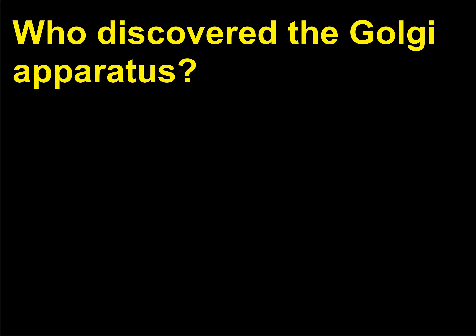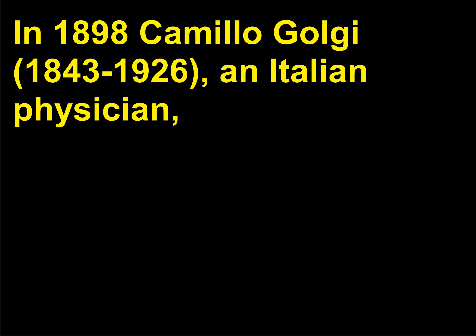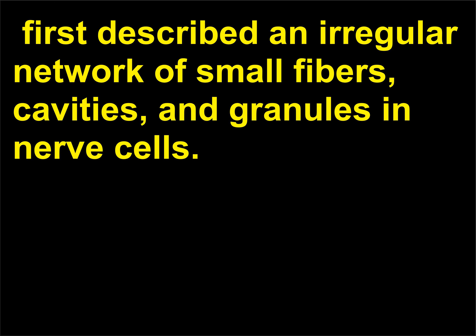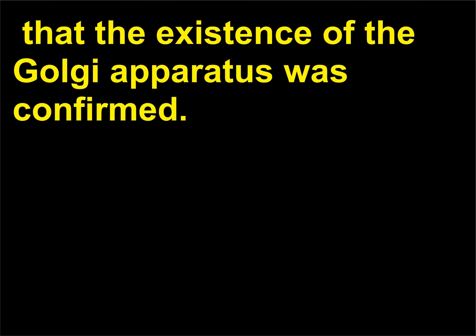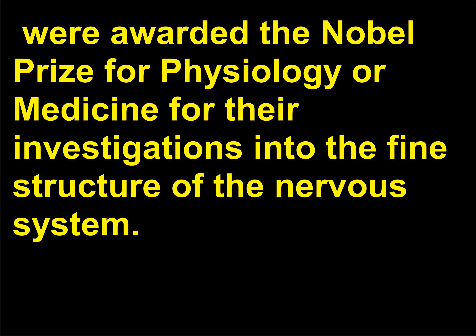Who discovered the Golgi apparatus? In 1898, Camillo Golgi, 1843–1926, an Italian physician, first described an irregular network of small fibers, cavities, and granules in nerve cells. It was not until the 1940s and the invention of the electron microscope that the existence of the Golgi apparatus was confirmed. In 1906 Golgi and Santiago Ramón y Cajal, 1852–1934, were awarded the Nobel Prize for Physiology or Medicine for their investigations into the fine structure of the nervous system.